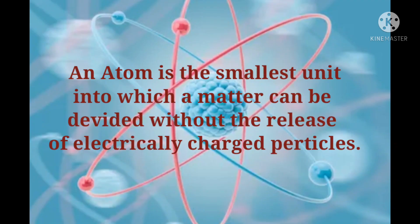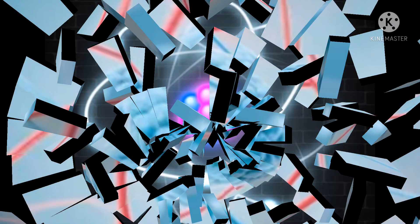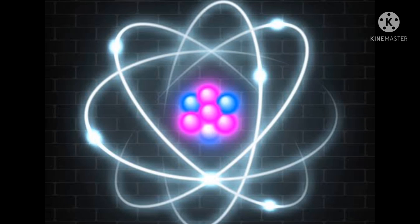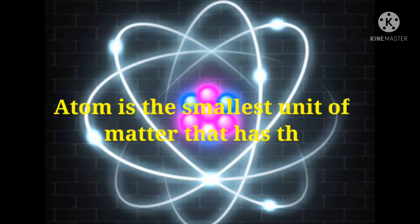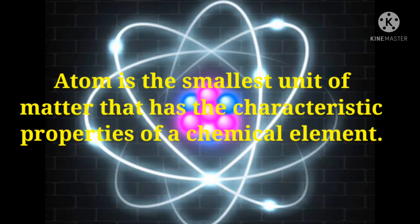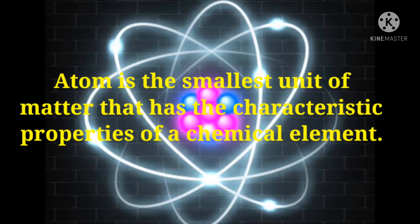An atom is the smallest unit into which matter can be divided without the release of electrically charged particles. Suppose if we break a chemical element continuously, the last particle we will get is an atom. So atom is the smallest unit of matter that has the characteristic properties of a chemical element.